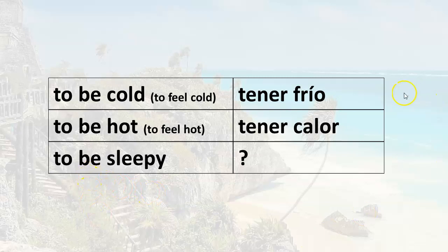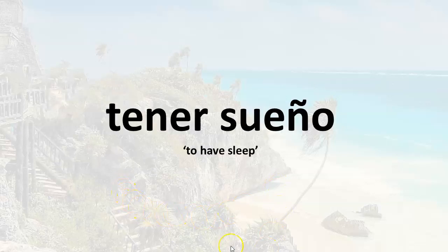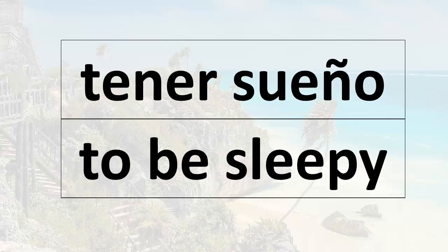So in previous lessons, you learned how to say 'to be cold' in the sense of 'to feel cold' — tener frío — and 'to be hot' in the sense of 'to feel hot' — tener calor. And now in this lesson, we're going to learn how to say 'to be sleepy,' and you can bet it uses the verb tener. So here's the expression: tener sueño. This means 'to be sleepy.' Literally, it means 'to have sleep,' but the idea it expresses is the same as the idea we express in English with 'to be sleepy.'